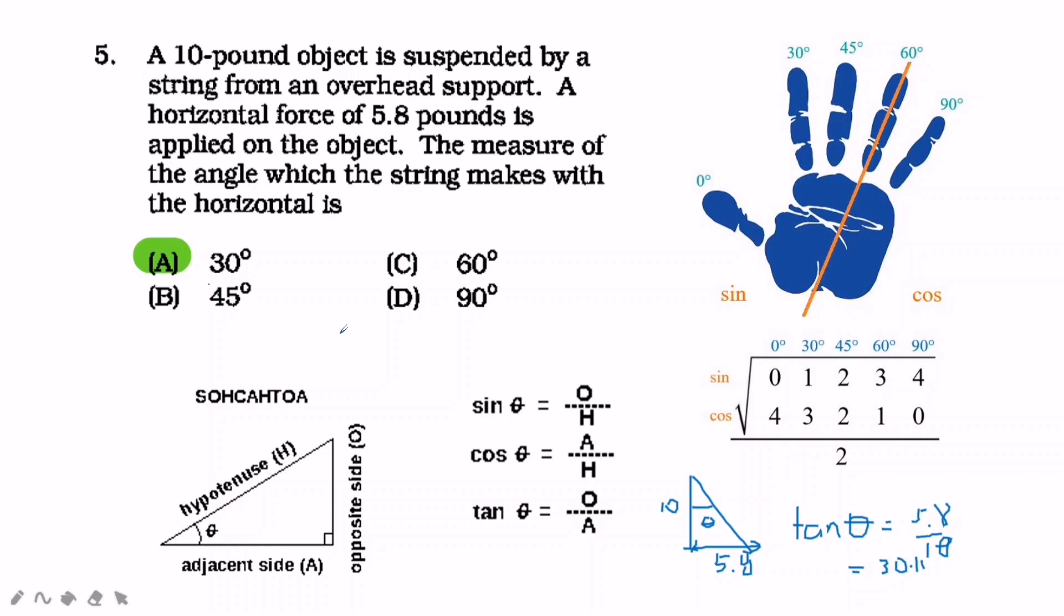Or meron din ako nabasa, nasabi is what we can do is multiply ito - itong dalawa, i-multiply mo siya minus this, minus yung 90 degree. And then ang lalabas is 30 point something din. So 30 yung sagot.